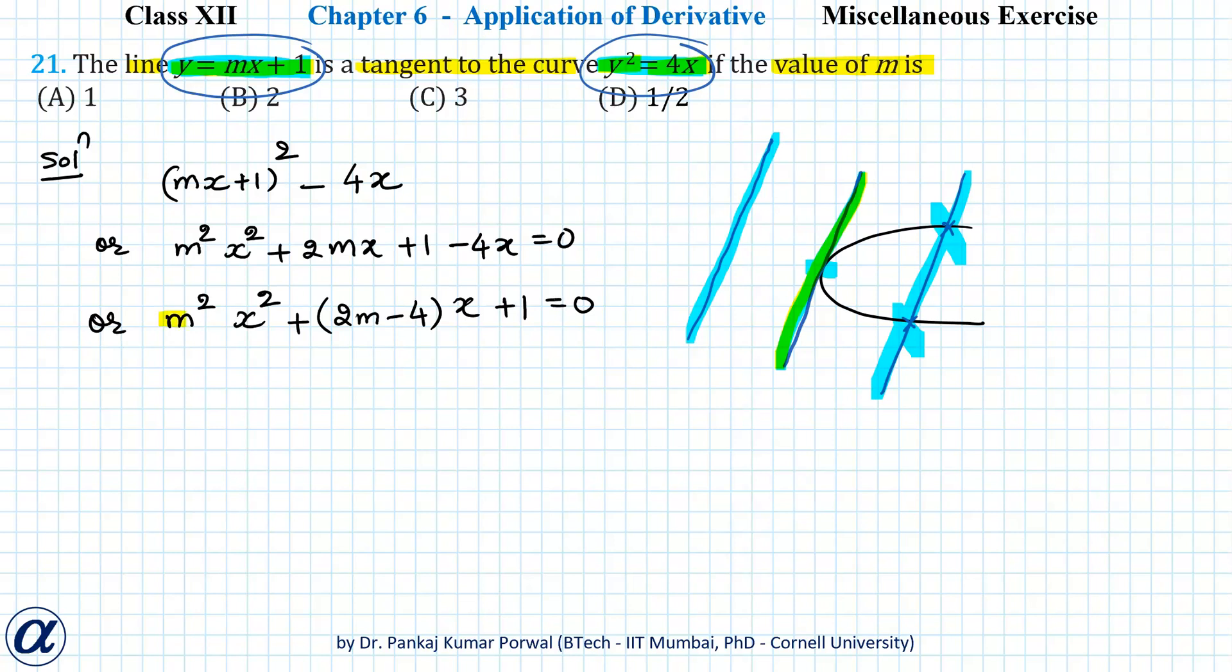Now, for this quadratic equation to have repeated roots, we should have b² = 4ac.